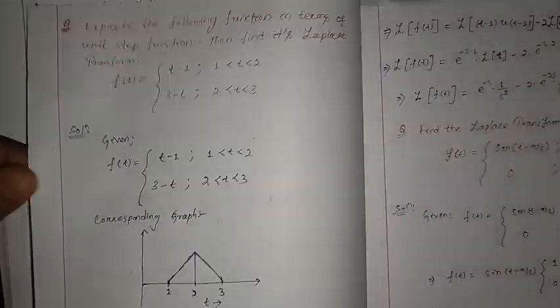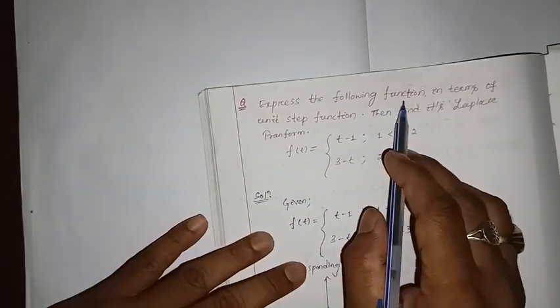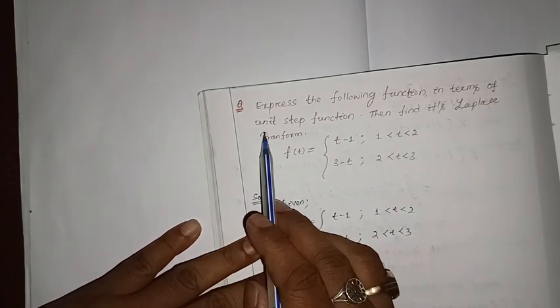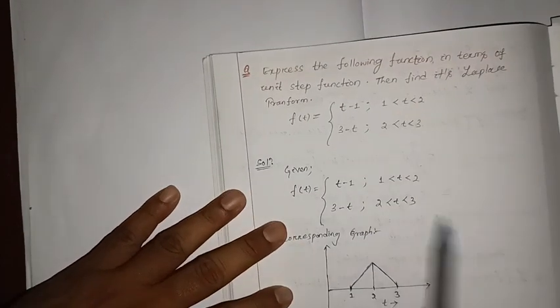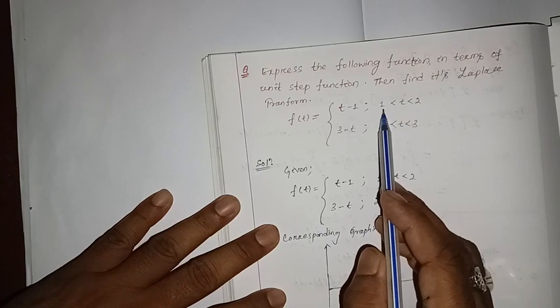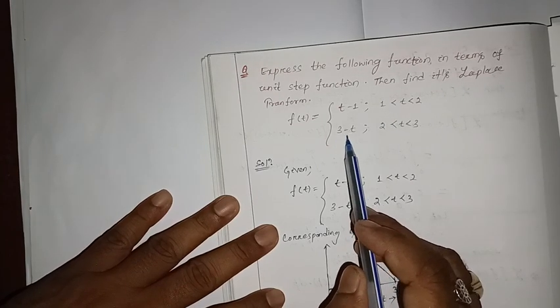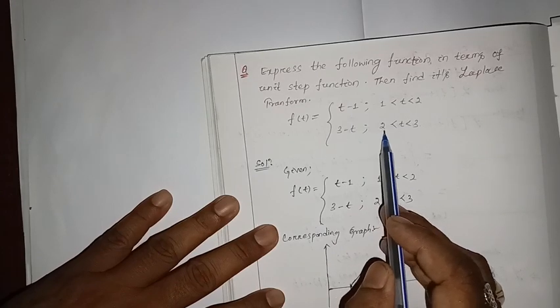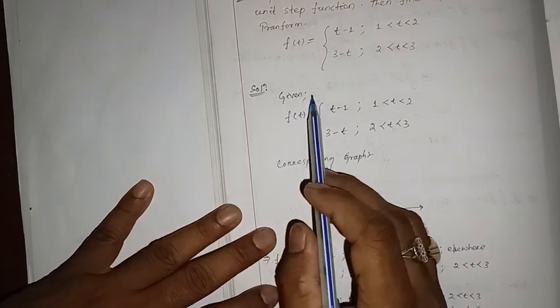Now we are going to solve some numericals using the Second Shifting Theorem. The first problem is: express the following function in terms of the unit step function, then find its Laplace transform. The given function is f(t) equals t minus 1 when t is between 1 and 2, and f(t) equals 3 minus t when t is between 2 and 3.